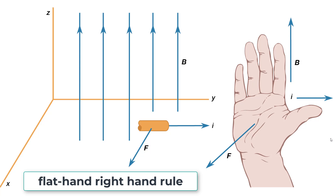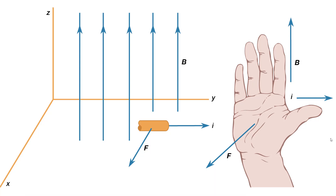There are a couple of different ways to do the right-hand rule. Here's my preferred method: take your right hand and keep it flat. Point your fingers in the direction of the magnetic field vectors. Point your thumb in the direction of the charge velocity — in this case, we're looking at an electric current, which is nothing more than a whole bunch of charges moving in a given direction. Your palm is then pointing in the direction of the magnetic force.